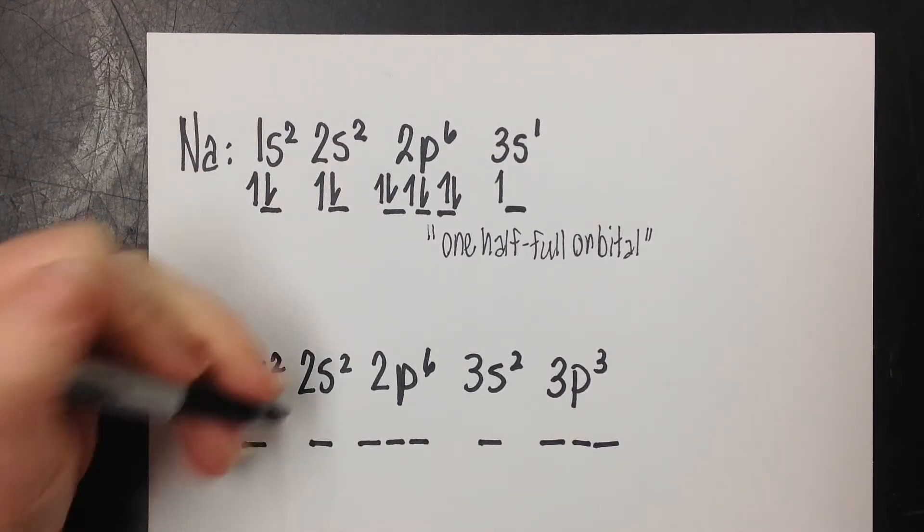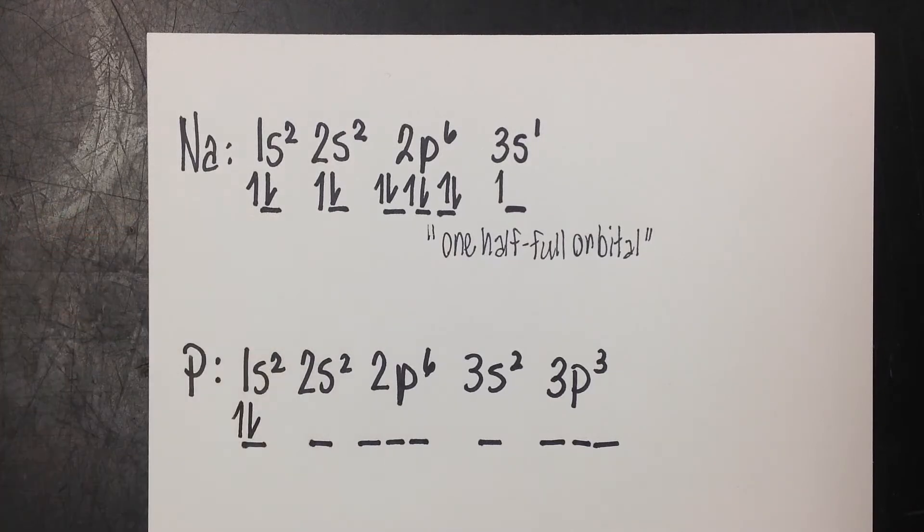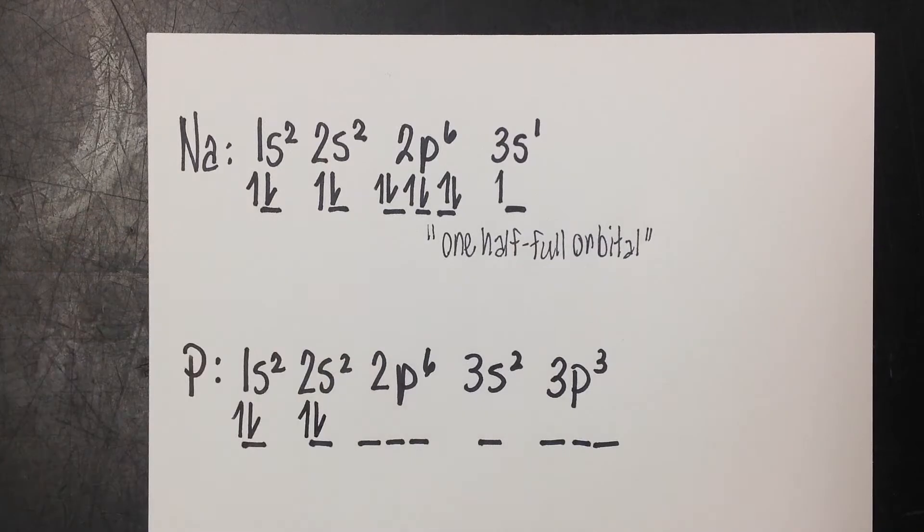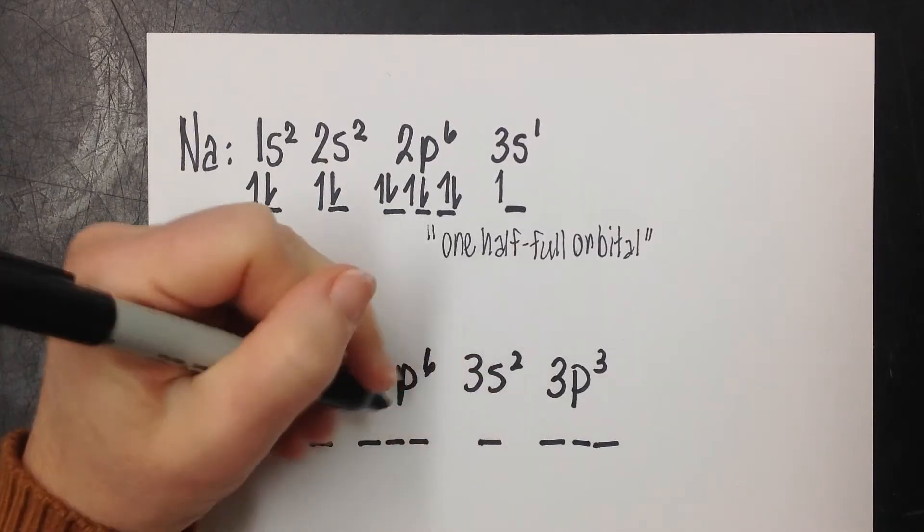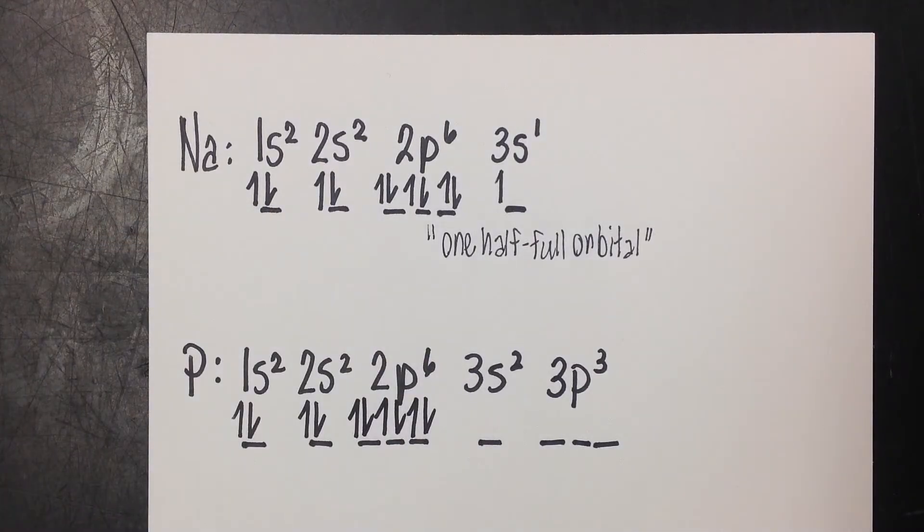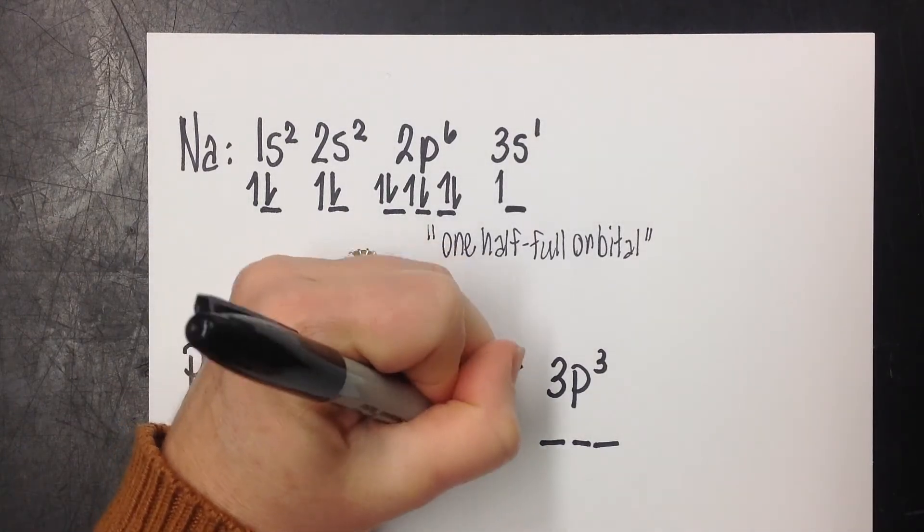So we have two electrons. 1, 2. Two electrons here. 1, 2. Now we've got 6. We've got to follow Hund's rule. 1, 2, 3, 4, 5, 6. As my students like to say, up, up, up, down, down, down. Two electrons here. 1, 2.